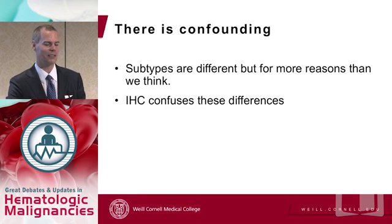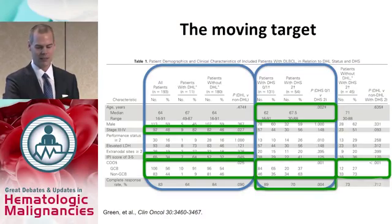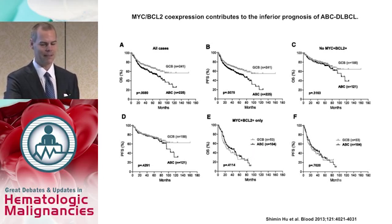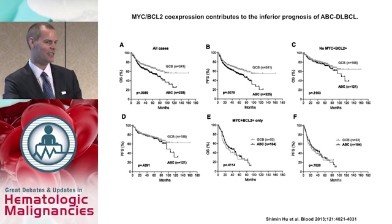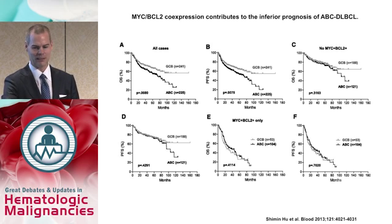Clearly the way we test for cell-of-origin differences has a major impact on how we treat patients going forward. Immunohistochemistry confounds these differences. MYC and BCL2 are clearly major factors: GCB subtype has double-hit lymphomas, but roughly 30% of ABC subtypes may be double expressors. When you use gene expression profiling and remove MYC-positive patients, outcomes are the same. Inhibiting BTK with ibrutinib could theoretically down-regulate BCL2 or MYC, but that question has to be interpreted using gene expression profiling, not immunohistochemistry.